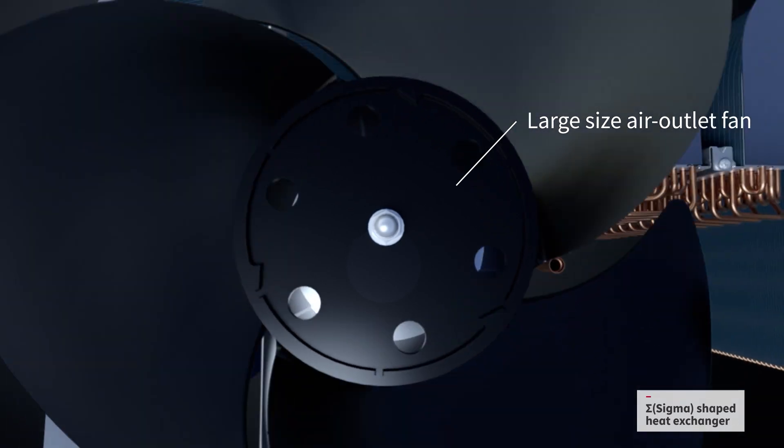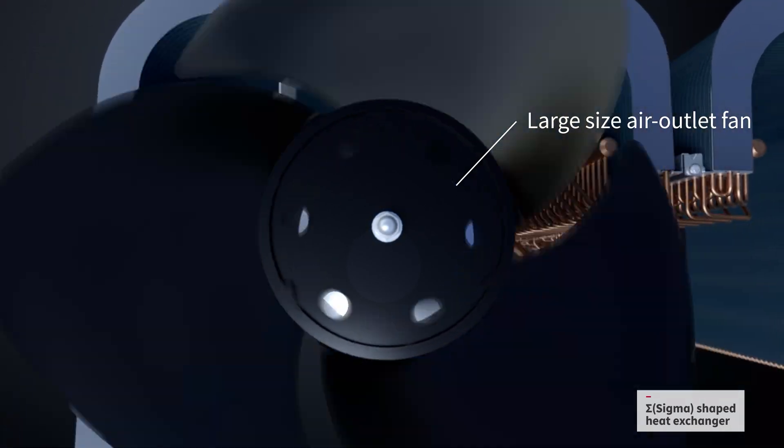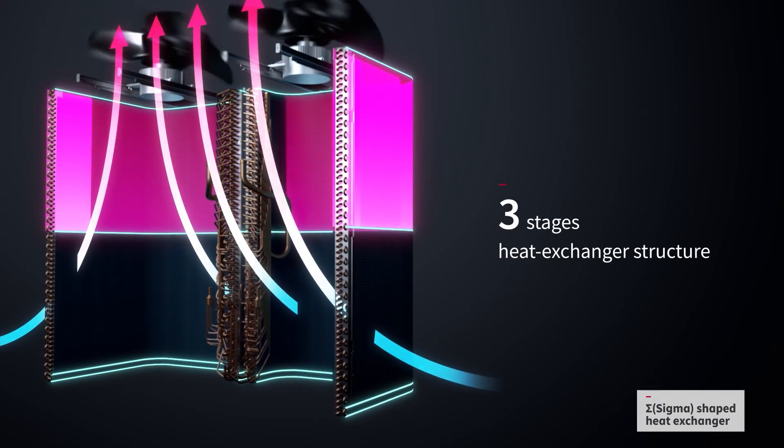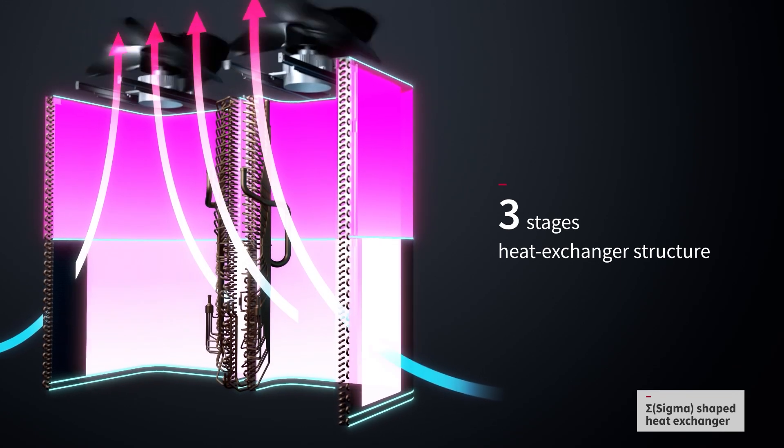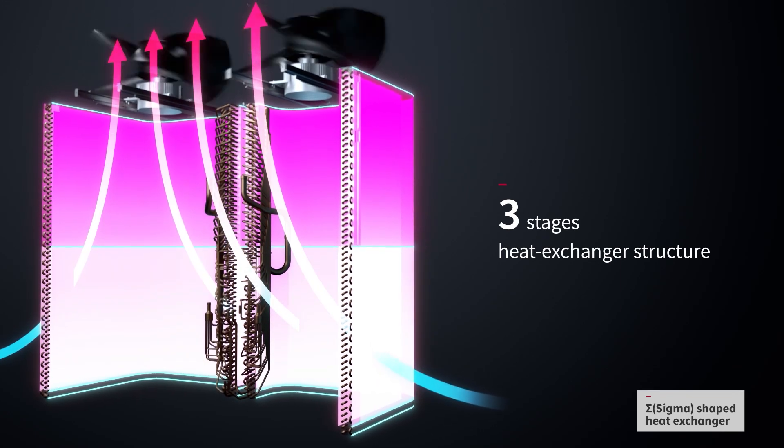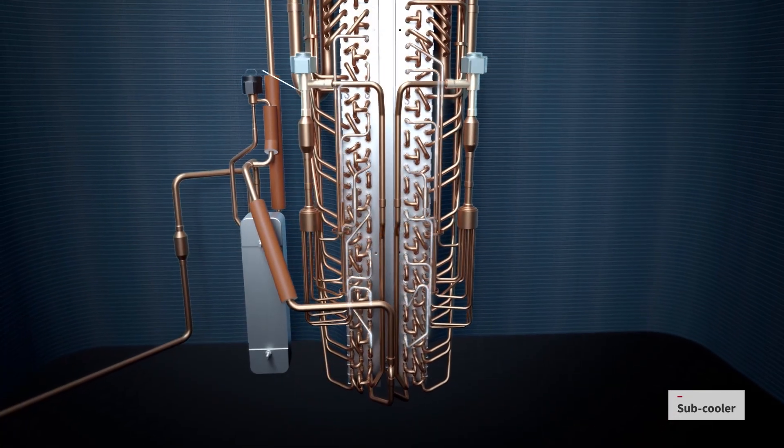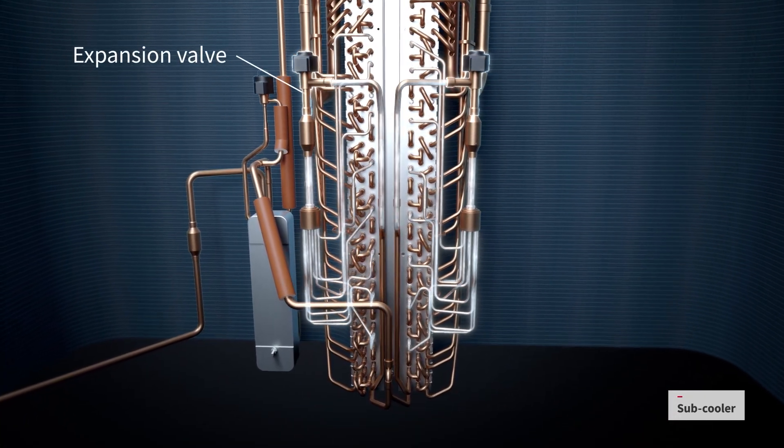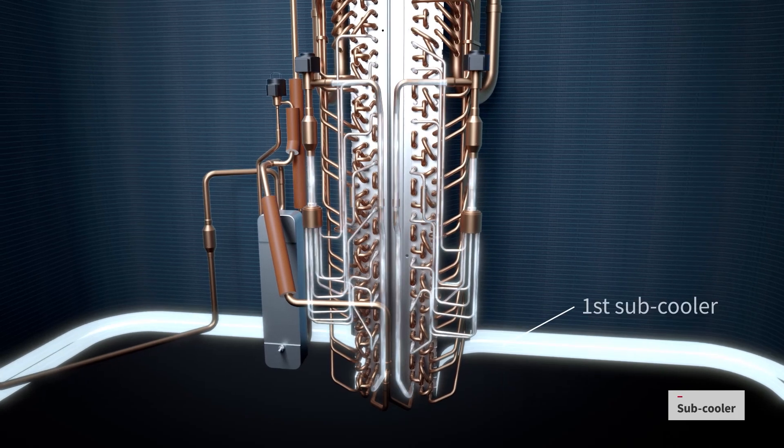Air is moved across the heat exchanger using a large fan. The whole process is designed to use less refrigerant and improve energy efficiency. The sigma heat exchanger's third stage is a subcooler, which also functions as a heater to prevent frosting.